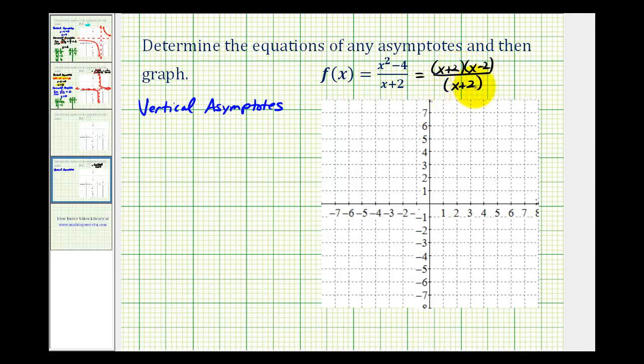So notice how x equals negative two is a zero of the denominator, but it's also a zero of the numerator because x plus two is a common factor between the numerator and denominator. So we don't have a vertical asymptote at x equals negative two. We actually have a hole at x equals negative two.